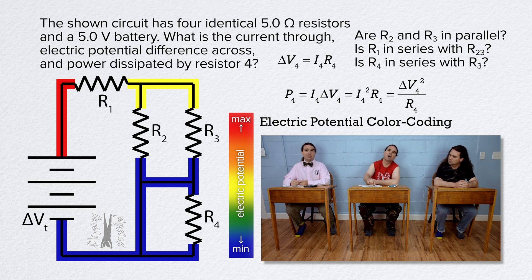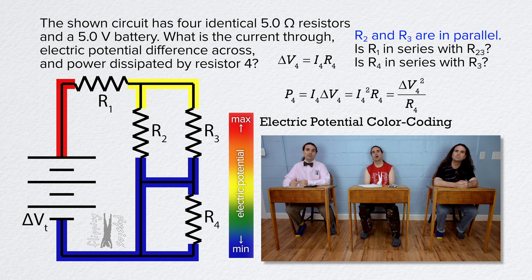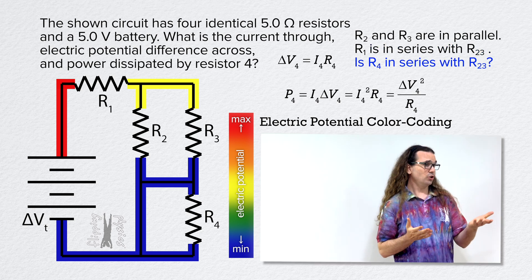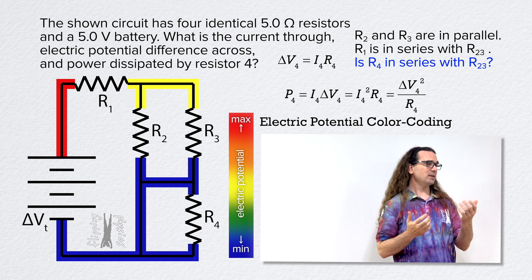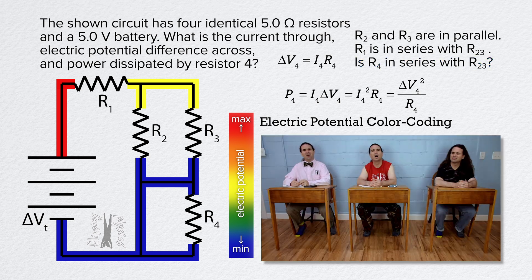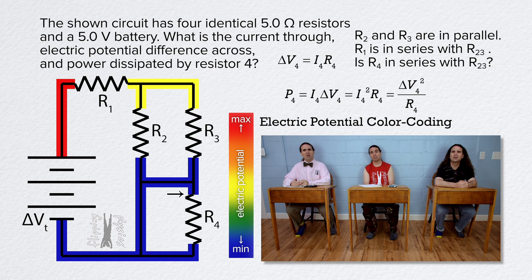Now we can see that we were correct. Resistors 2 and 3 have the same electric potential difference and are in parallel. Every charge that goes through resistor 1 must eventually go through equivalent resistor 2 and 3; therefore they are in series. But are they also in series with resistor 4? Thanks, Billy — you have actually illustrated all of the answers to this question. The electric potential difference across resistor 4 goes from blue to blue, from the minimum electric potential to the same minimum electric potential. So the electric potential difference across resistor 4 is zero.